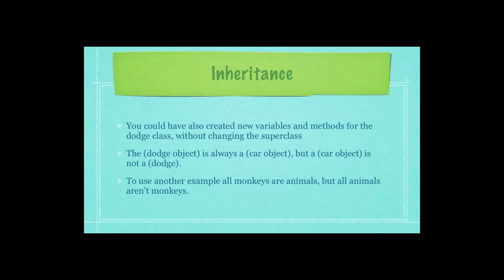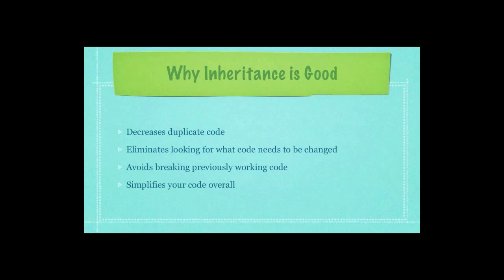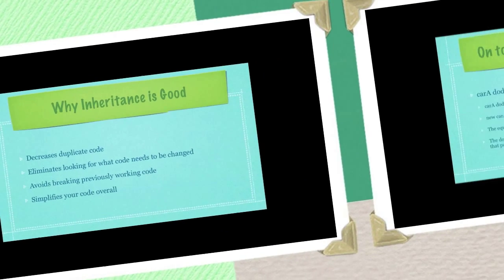The Dodge object — remember — is always a car object, but a car object is not necessarily always a Dodge object. Why is inheritance good? First off, it decreases duplicate code. It eliminates looking for code that needs to be changed because you never change old code — you just overwrite it. It avoids breaking previously working code and it simplifies your code overall.